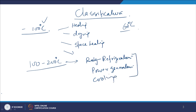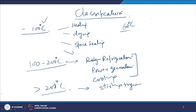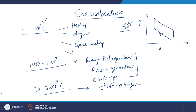When the solar thermal energy is greater than 200 degrees centigrade, we can run the Stirling engine. If you recall the Stirling cycle depicted on a PV diagram, it has two constant volume processes and two constant temperature processes.